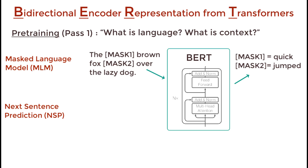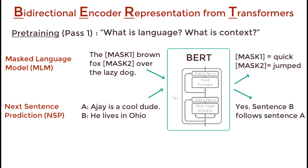In the case of next sentence prediction, BERT takes in two sentences and determines if the second sentence actually follows the first — essentially a binary classification problem. This helps BERT understand context across different sentences. Using both of these together, BERT gets a good understanding of language.